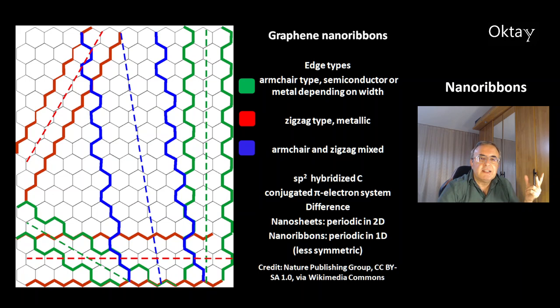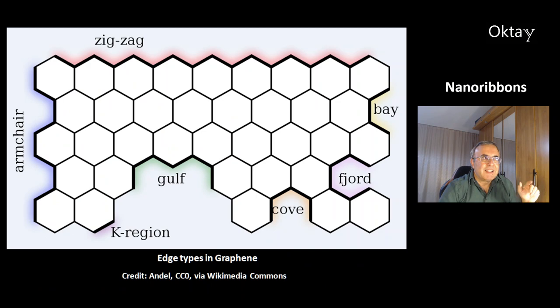Like graphene, nanoribbons are sp2 hybridized carbon atoms, so they have a conjugated pi-electron system. Nanoribbons are different from nanosheets: nanosheets are periodic in two dimensions, but nanoribbons are only periodic in one dimension, meaning nanoribbons have less symmetry.